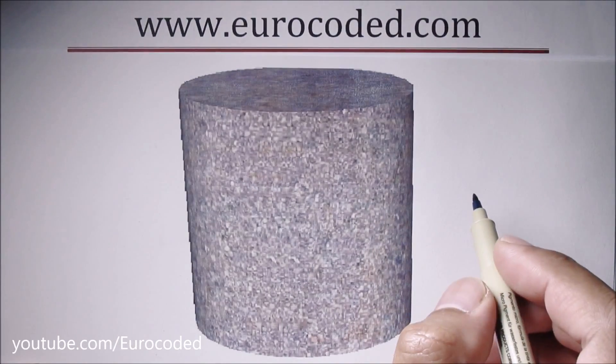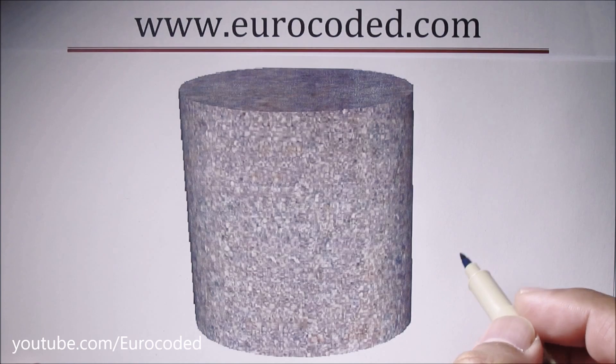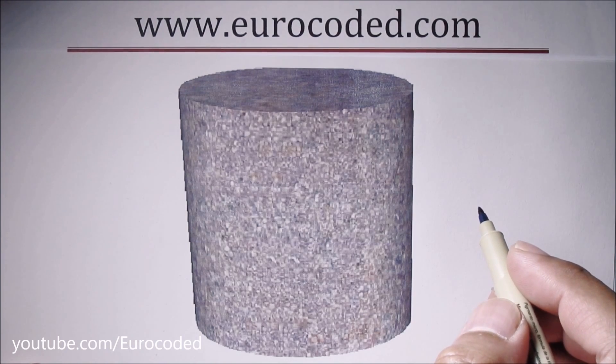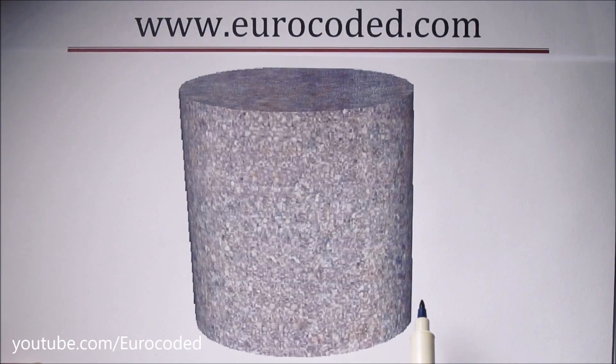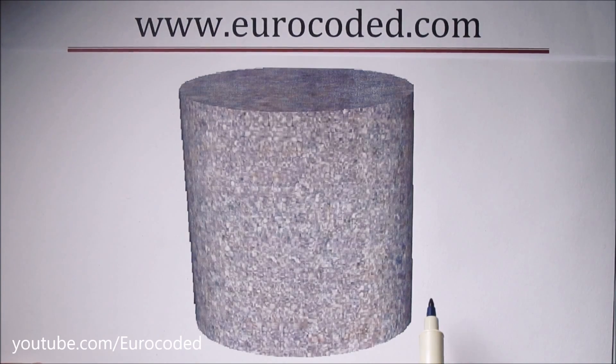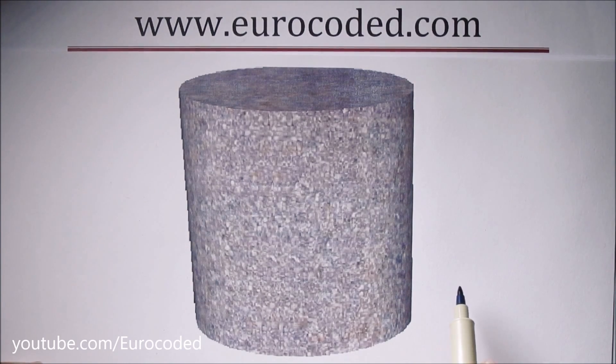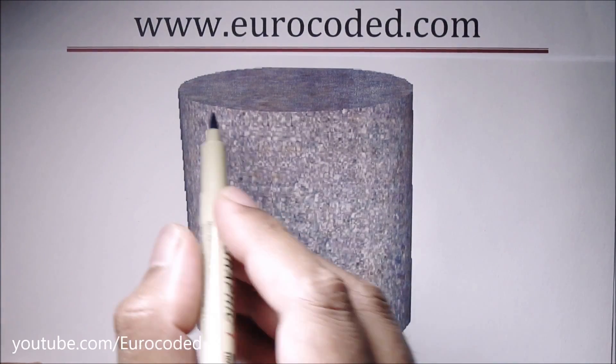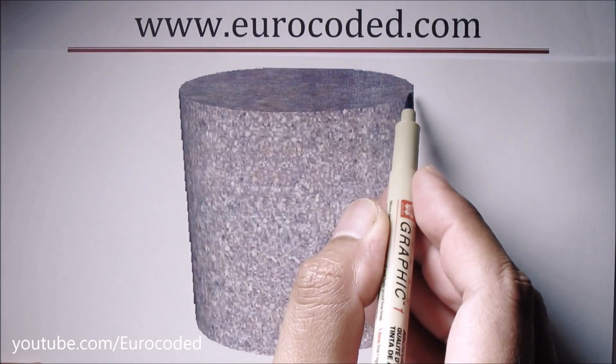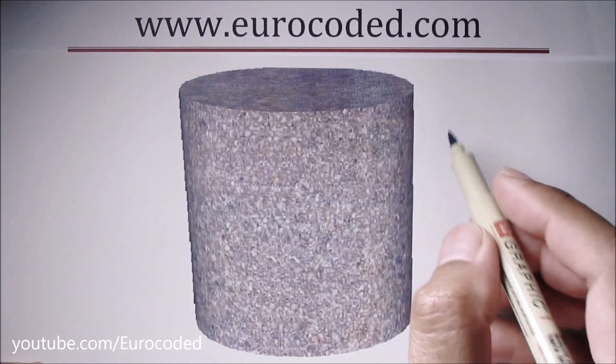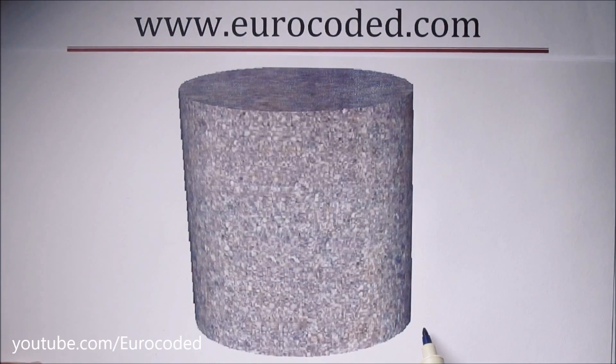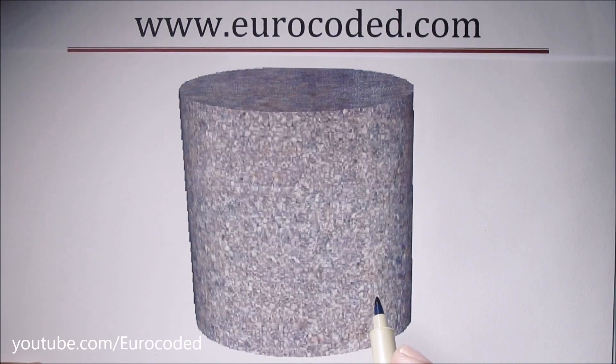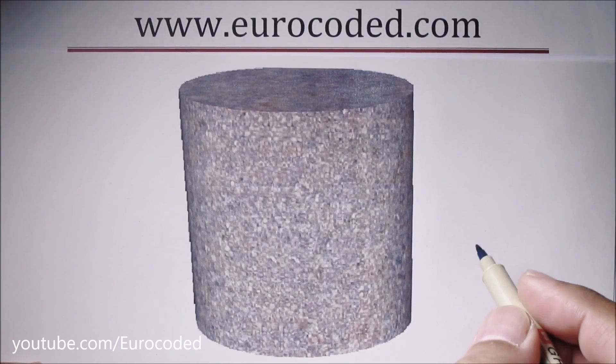This important property of hardened concrete is determined by compression test on specially produced specimens. What we do is when we pour fresh concrete, we take specimens and mold them into cylinder shapes. These cylinders are 150 mm diameter by 300 mm of concrete specimens. Then we test these cylinders at 28 days to get FCK.